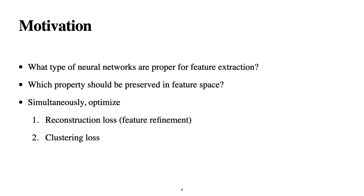The main motivation of this paper is to investigate what type of neural network is proper for feature extraction. We have different kinds of neural networks — for example, autoencoder, stacked autoencoder, variational autoencoder — so which one should we use for this task? And which properties should be preserved in the feature space? Simultaneously, we will optimize both reconstruction loss and clustering loss.